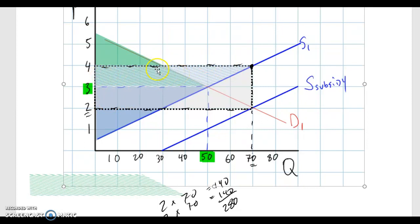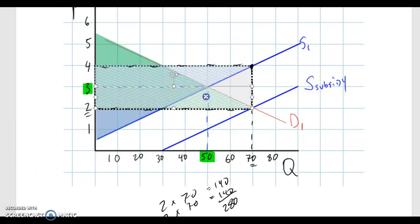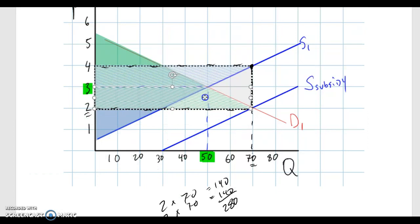Well, likewise, consumer surplus is going to grow because price fell. Remember, we moved down the demand curve to get to 70 and $2. So we have new consumer surplus that is this area here, the green lines.